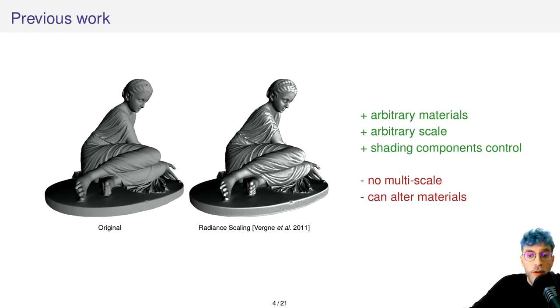Later, Vergne and colleagues introduced a novel method called radiance scaling. As with light warping, it enables the enhancement of arbitrary materials at arbitrary scales. What is actually new with this method is the ability to explicitly control the enhancement of shading components, allowing users to enhance highlights or refractions separately for instance.